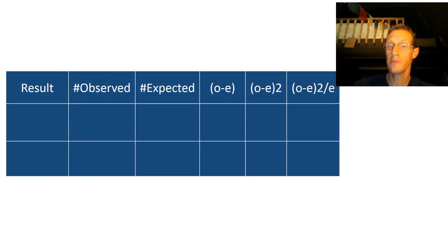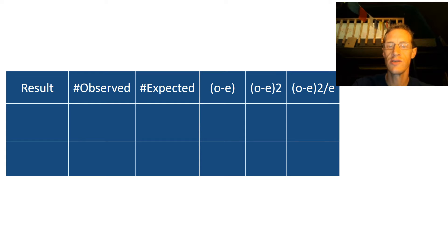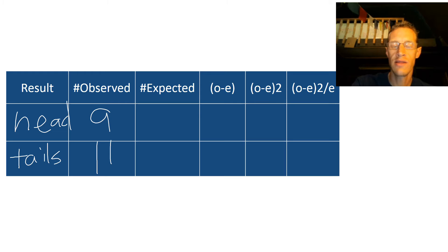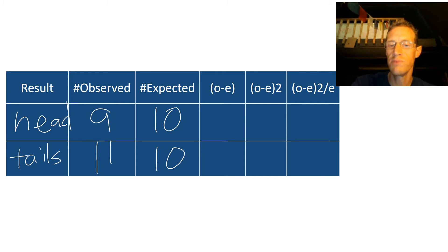When doing chi-square, sometimes it's helpful to make a table. It's not necessary, but it's a helpful little thing for going through the steps. If you notice on the end there, that is our chi-square formula: O minus E squared over E. The first thing we do is write in the result column — heads and tails — those were the two different results we got.